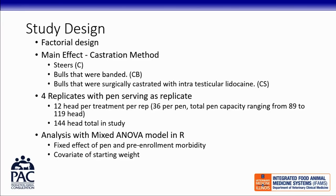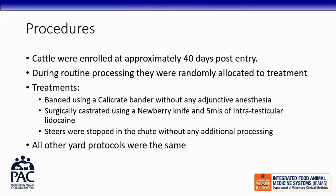The same six or eight loads of cattle were split across four pens and allocated at arrival. We waited 40 days from placement until processing — standard procedure in this yard for high-risk cattle. So these were not cattle castrated immediately following shipping, but cattle that had been in the yard for 40 days before enrollment.